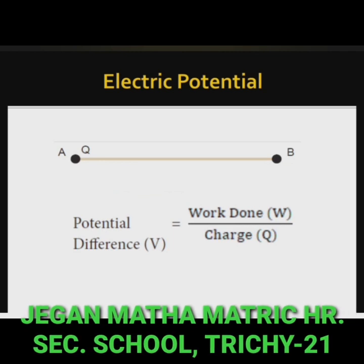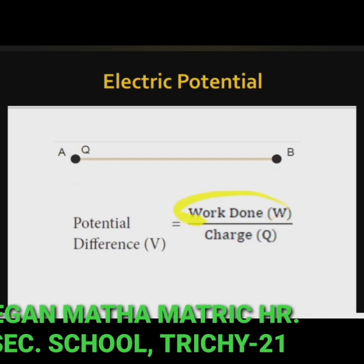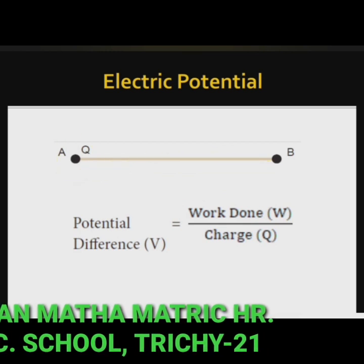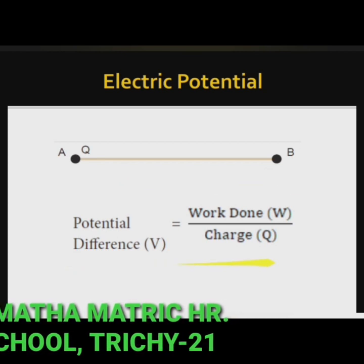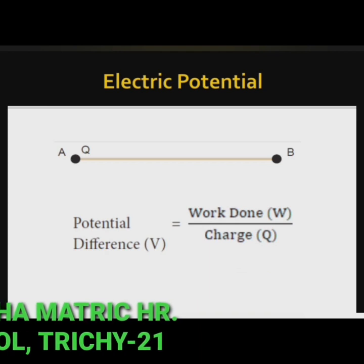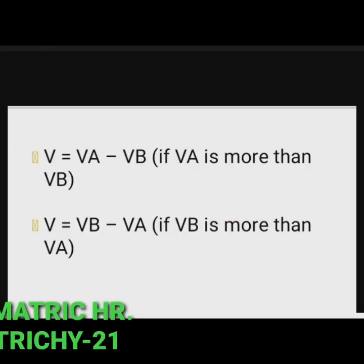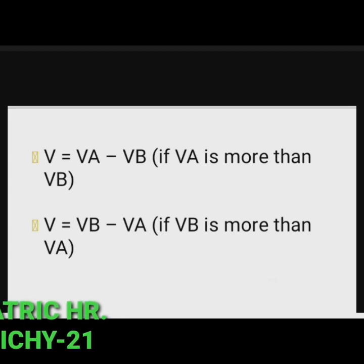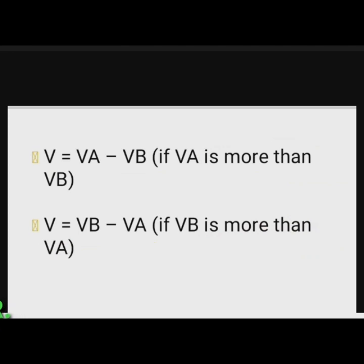Suppose a charge Q is moved from point A to another point B. Let W be the work done to move the charge Q from A to B. Then the potential difference between points A and B is given by: potential difference = work done / charge. Potential difference is also equal to the difference in electric potential of the two points. If V_A and V_B represent the electric potential at points A and B respectively, then V = V_A − V_B (if V_A > V_B), or V = V_B − V_A (if V_B > V_A).